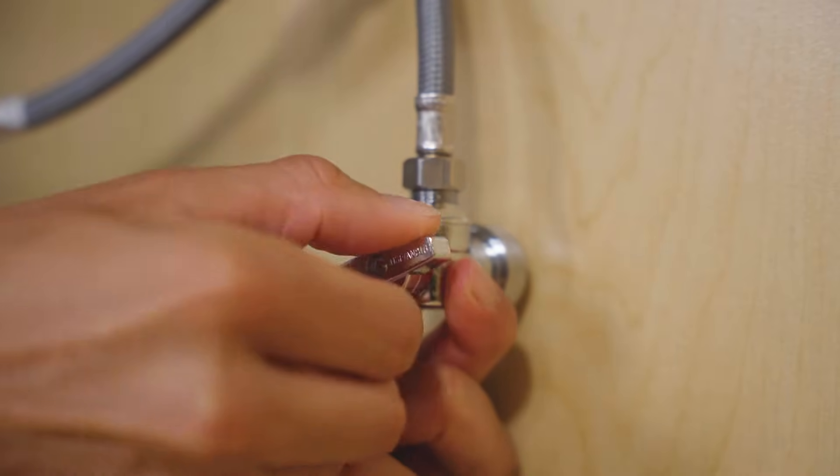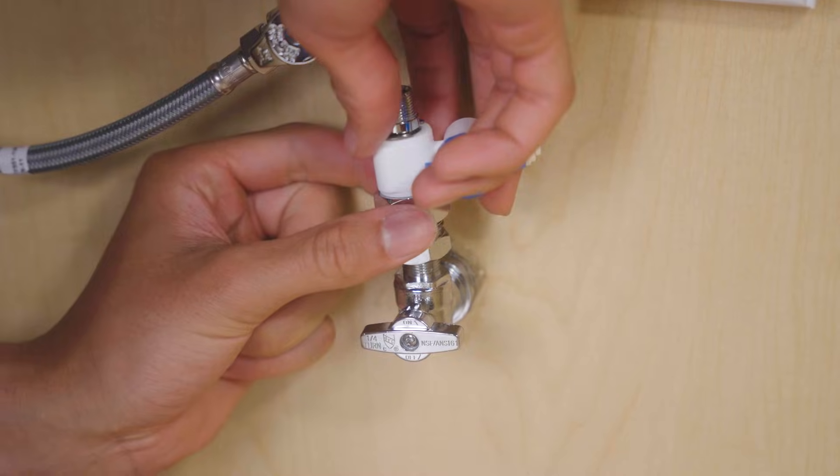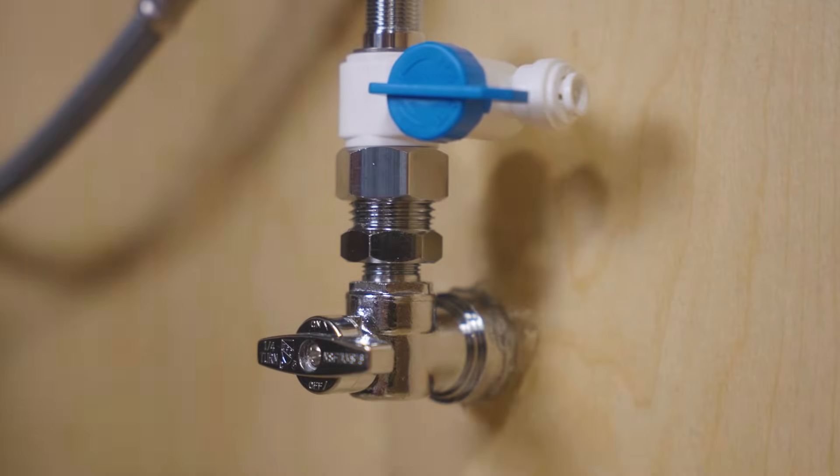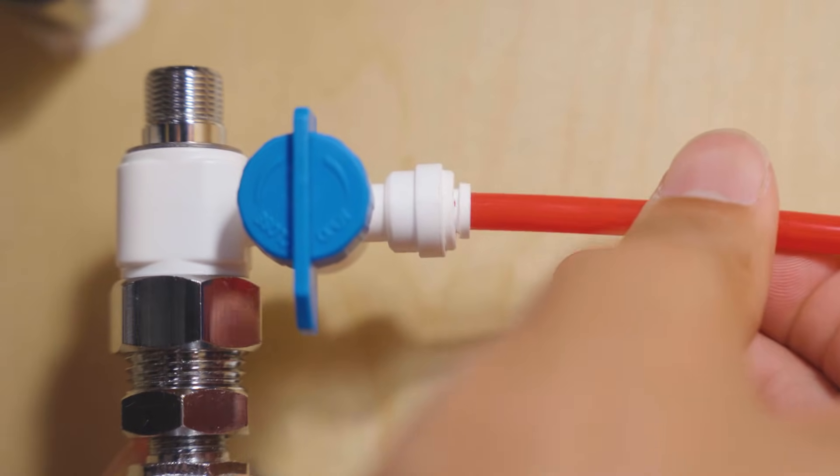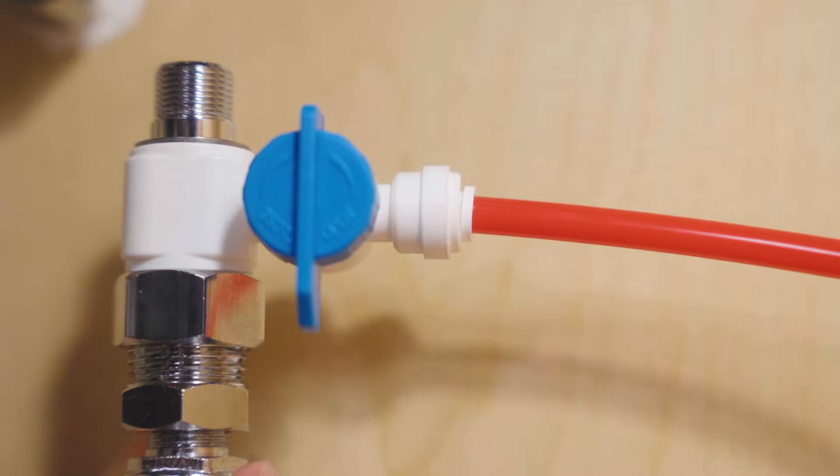Shut off the cold water. Disconnect the riser, install the feed adapter, and reconnect everything. Now push the red tubing into the adapter's quick-connect fitting. Push it in deep, then give it a light tug. If it holds, you're good.